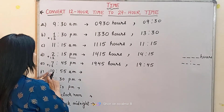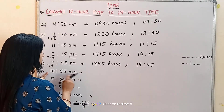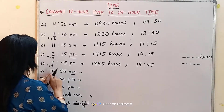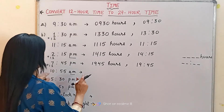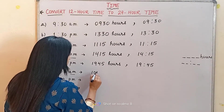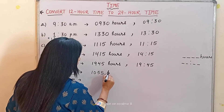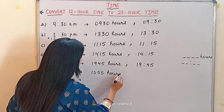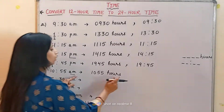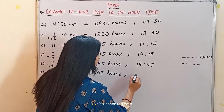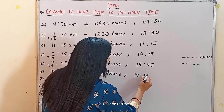Now the next one is 10:55 AM. There will be no change in the hours, so we simply remove the colon and write 1055, then 'hours'. It is 1055 hours. Or in the colon form, we write 10:55.